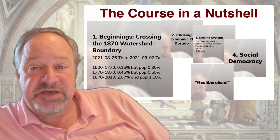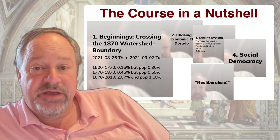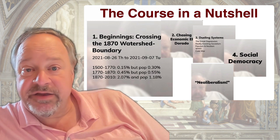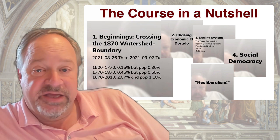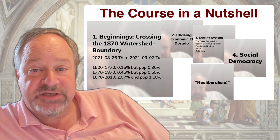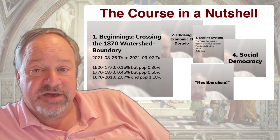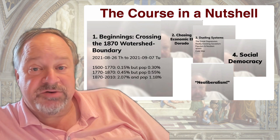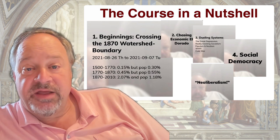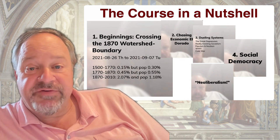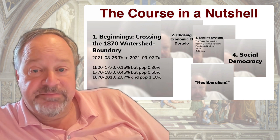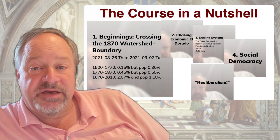From 1870 to 1914, people at the time and in retrospect thought of this as economic Eldorado, a belle époque — a world in which civilization was advancing, people were becoming richer, the world was becoming more civilized, more democratic, more peaceful, at a pace never before seen. And then it all falls apart between 1914 and 1939.